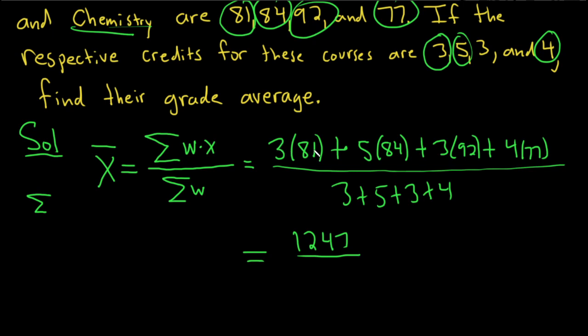Let's double check that. 3 times 81, 5 times 84, 3 times 92. Yep. And on the bottom, we have 3 plus 5 plus 3 plus 4. So that's 15.